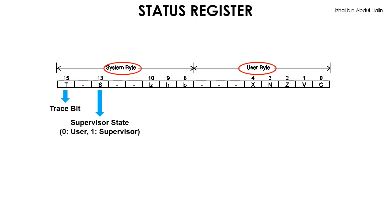Bits 8, 9, and 10 are the interrupt mask bits. They indicate the status of the 68k microprocessor's interrupt pins. A detailed explanation of interrupts is reserved for a later video. That concludes the bits in the system byte.